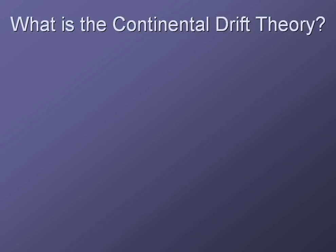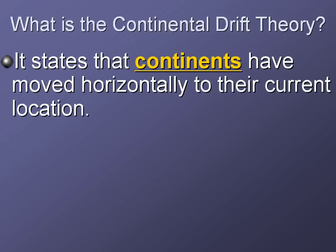So what is the Continental Drift Theory? It's a pretty basic theory. It basically states that the continents have moved horizontally to their current location — not going up and down in great distances. They may move up or down a little bit as they're plowing through the ocean. It was the idea that the continents literally plowed through the oceans, much like an icebreaker would plow through the snow, moving ice off to the sides. Early geologists thought that maybe the continents moved this way.